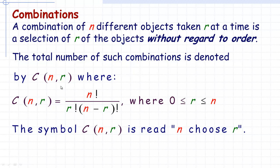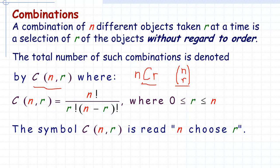The total number of such combinations is denoted in several different conventions. One is C(N, R) — a bracket with N, comma, R. This is the number of objects, and this is the size of the group you're picking. Another common symbol is to write N first, then C, then R. And another notation, which you'll see on calculators sometimes, looks like a matrix with N on top and R on the bottom. Those are the three most common ways to write combinations.